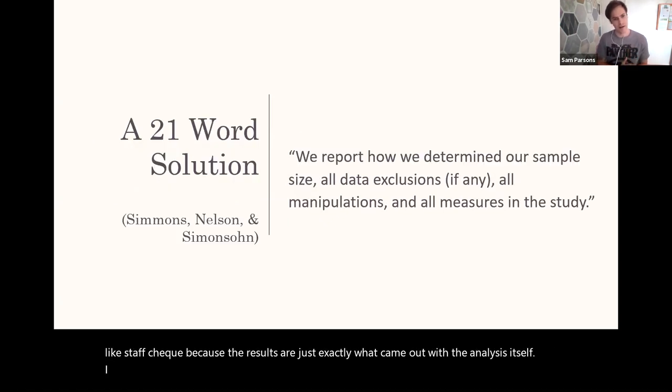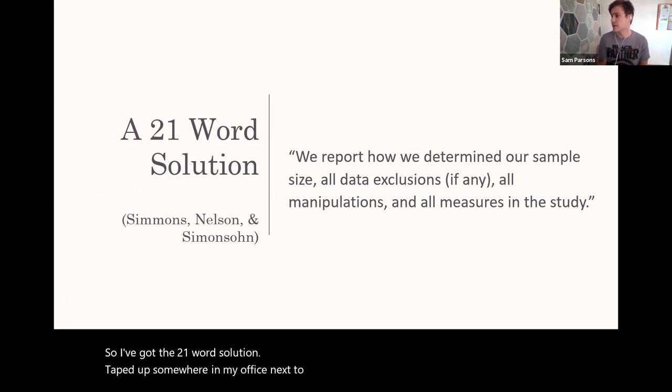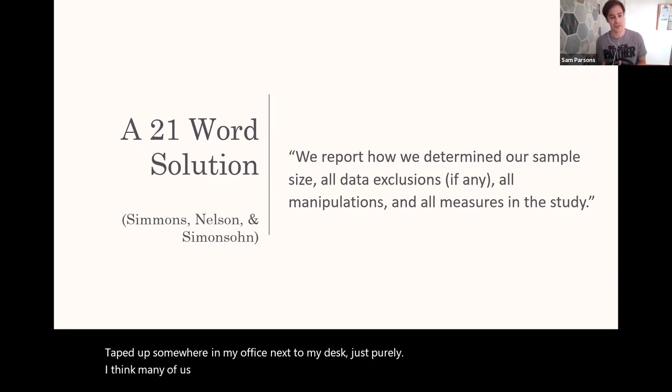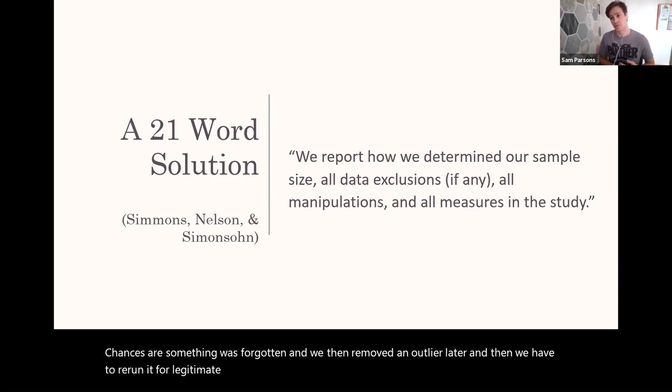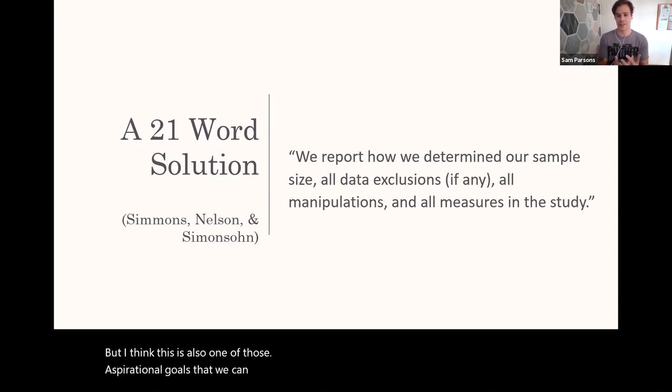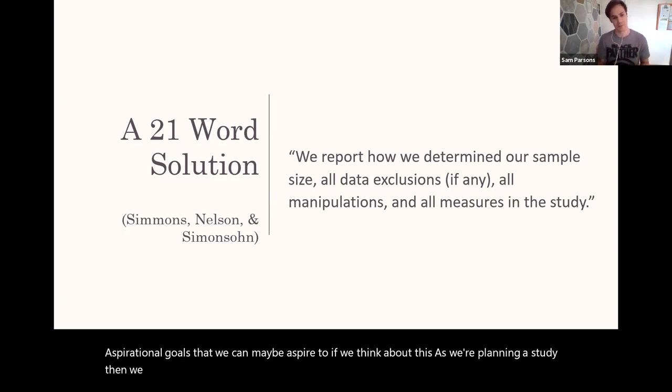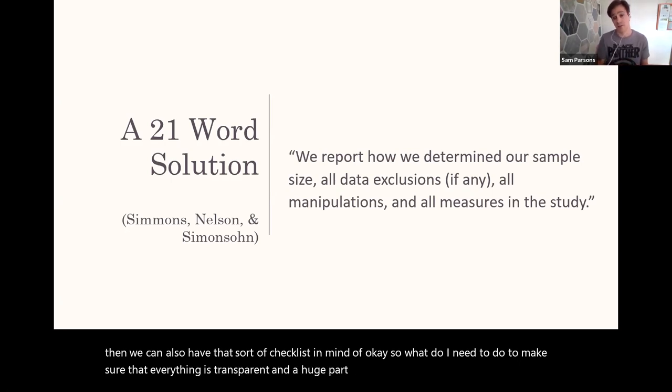I'd encourage, so I've got the 21 word solution taped up somewhere in my office next to my desk. I think many of us probably couldn't for most studies honestly report that we determined everything in advance because chances are something was forgotten and we then removed an outlier later and we had to rerun it for legitimate reasons, or a reviewer suggested an extra analysis or something. But I think this is also one of those aspirational goals that we can maybe aspire to. If we think about this as we're planning a study then we can also have that checklist in mind of okay so what do I need to do to make sure that everything is transparent? A huge part of reproducibility I think is transparency more than anything else.